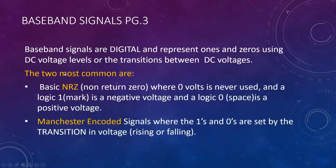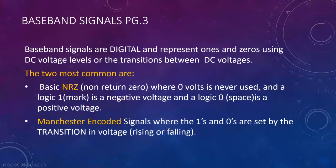The first is called basic NRZ, or non-return-to-zero. The idea is that zero volts is never used. Logic one, called a mark, is a negative voltage, and logic zero, called the space, is a positive voltage — so one might be negative one volt and the other positive one volt. The second common digital signaling method is called Manchester encoded.